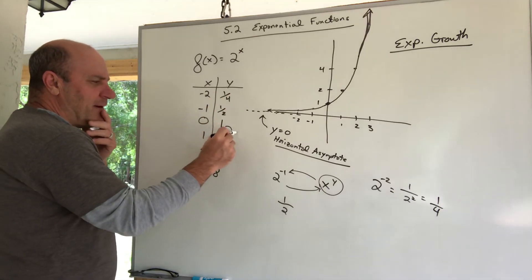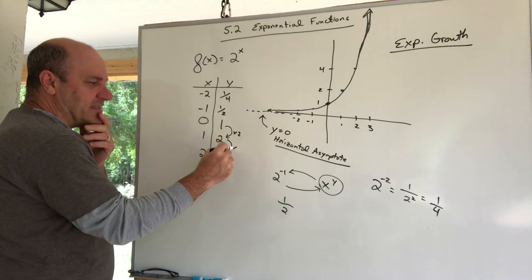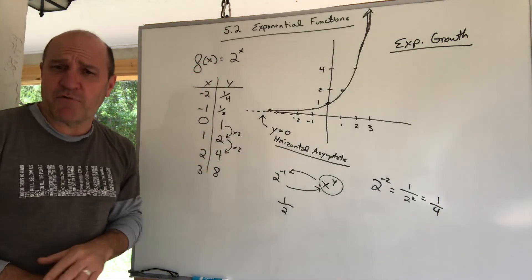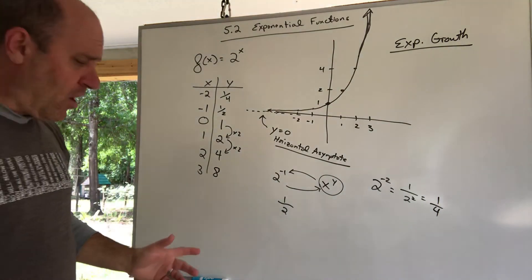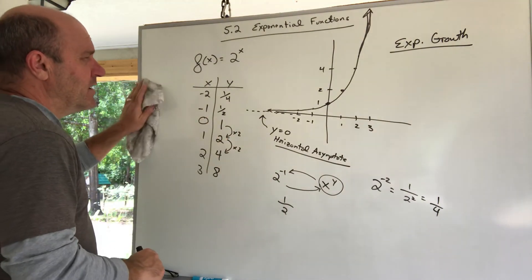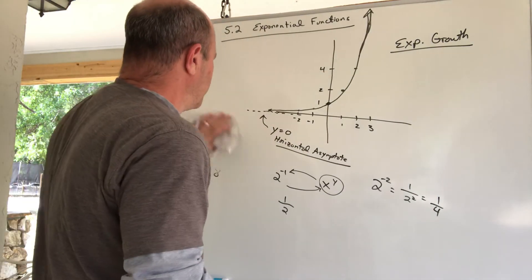Again, you multiply by two, and that's the base. The thing you multiply by every time is the base. So they don't always have to grow. Let's do another. I'm going to erase this one and look at a different function here.